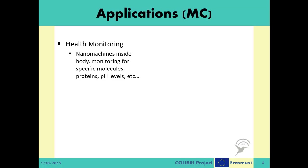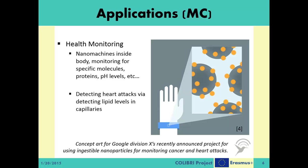Based on the application, health monitoring nano-machines can work either as a monitoring mechanism or a preventive one. As an example for a preventive mechanism, in a health monitoring application for detecting lipid levels in the capillaries, when the lipid level is detected to be too high, the higher-level nano-machines might decide to release specific chemicals that can clean these lipids from the capillaries.